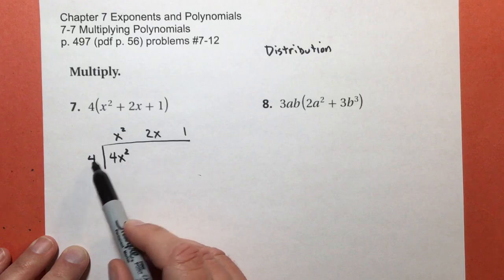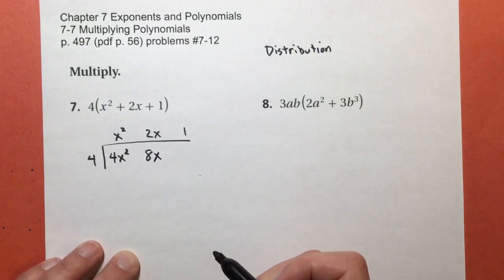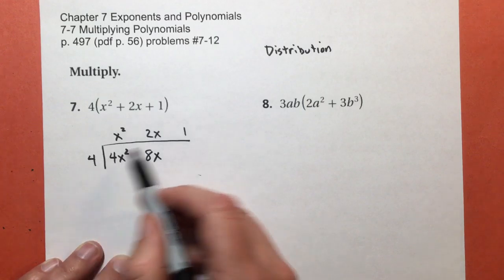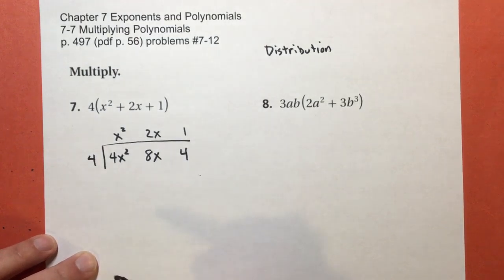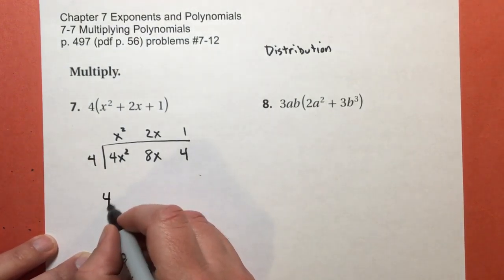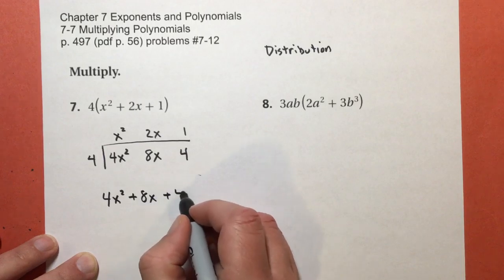What goes here? 4 times 2x. 4 times 2 is 8. So I get 4 times 2x is 8x. And 4 times 1 is 4. So I can't leave it like that. That's just me figuring it out. So I'm going to write 4x to the second power plus 8x plus 4.